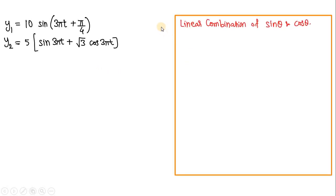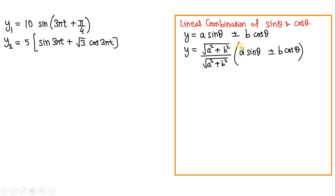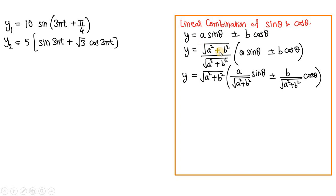Let us learn a mathematical trick. Whenever you have a linear combination given by y = A sin θ ± B cos θ, where the angles are the same but coefficients A and B can be different, we multiply and divide the whole expression by √(A² + B²), where A and B are the coefficients of sin θ and cos θ. We keep one √(A² + B²) outside and send the other inside the bracket below A and below B, giving us the ratios A/√(A²+B²) and B/√(A²+B²).